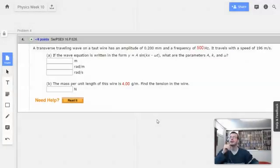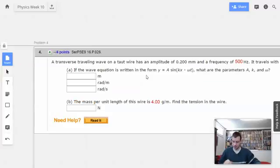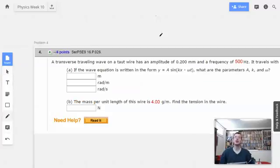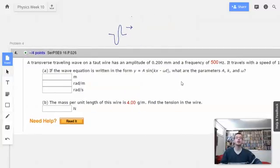Week 10, problem 4. A transverse traveling wave on a taut wire has an amplitude of 0.2 millimeters and a frequency of 500 hertz. It travels with a speed of 196 meters per second. If the wave equation is written in this form, what are the parameters a, k, and omega?